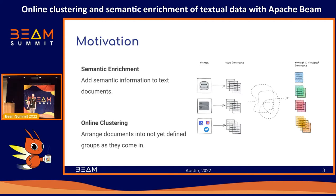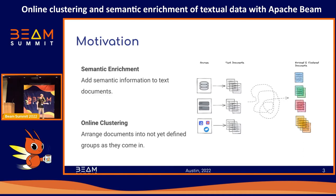One is semantic enrichment. By this we basically mean the process of adding semantic information to a text document for downstream tasks. So we are not talking about replacing any kind of content, but rather just adding information to the document that we can then use in downstream tasks. The second part is online clustering, which just means that we want to arrange the documents into not yet defined groups as they come in — and that is basically the online part of this.